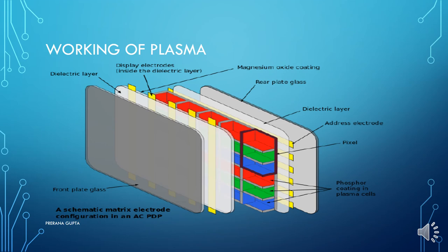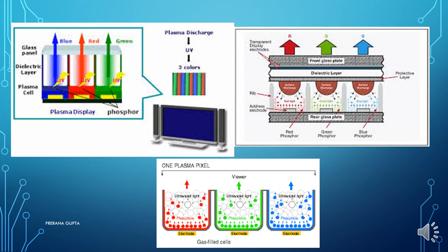Like this, your single pixel is generated, and in the same way more number of pixels are generated and the whole picture is formed. Now you can see here, plasma display. Ultraviolet rays will fall in this color. The photon's energy is in the form of ultraviolet rays. It will fall in this color and the green, red, blue color will generate pixels.